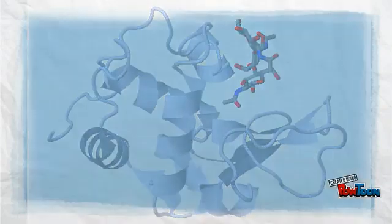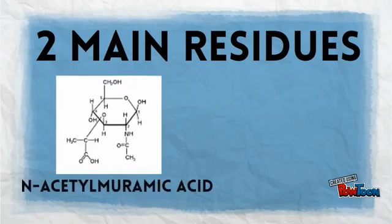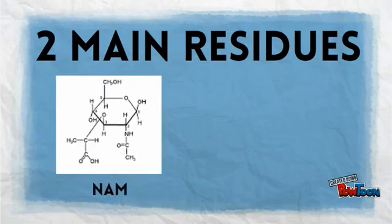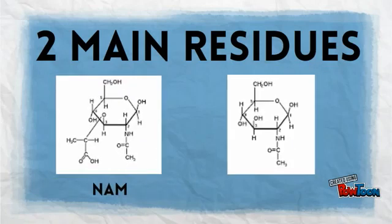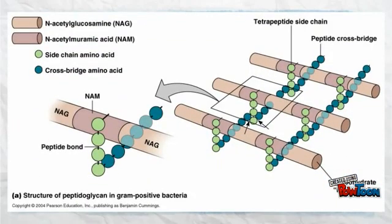Peptidoglycan strands are comprised of two main residues: N-acetylmuramic acid, or NAM, and N-acetyl-D-glucosamine, NAG. Together, they make a long strand of polysaccharides via 1,4-beta linkages and create a very sturdy cell wall for bacteria. And it's this that the active site of lysozyme targets.